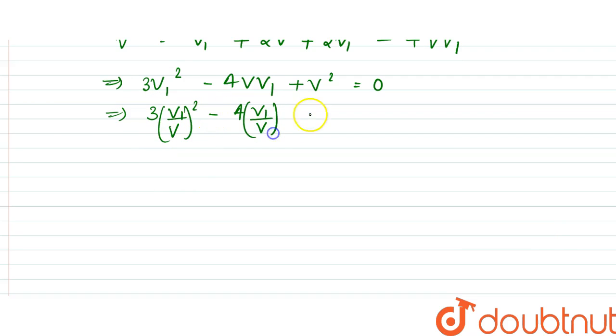a quadratic equation, so v₁/v can be written as (4 ± √(b² - 4ac)) / 2a. That is 4 square is 16 minus 4 into 3 into 1, that is 12, whole divided by 2 into 3, that is 6. So this would be equal to (4 ± √4) / 6,